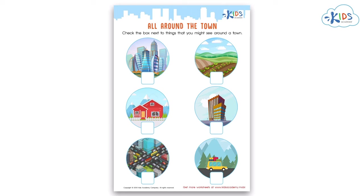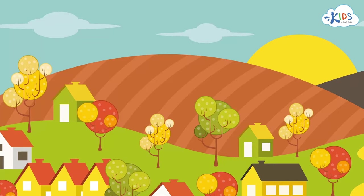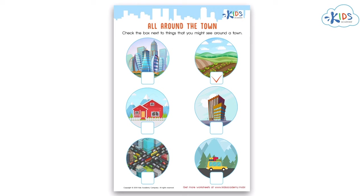Let's get started on the worksheet. The directions say: check the box next to things that you might see around a town. First we see a picture of tall buildings, then a picture of farmland. Which of these could you find in a small town? The correct answer is farmland. It is common to see farms in a town setting. Good job.